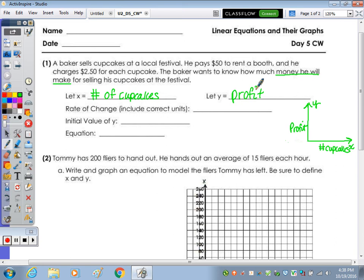What's the rate of change? Well, we go back up to the question. He charges $2.50 for each cupcake, so he's going to make $2.50 per one cupcake. The initial value of y - if we go back to the question, he's already paid $50 to rent the booth. I say we're typically in quadrant one, but in this case, we're already $50 in debt, more or less. We've already spent that $50.